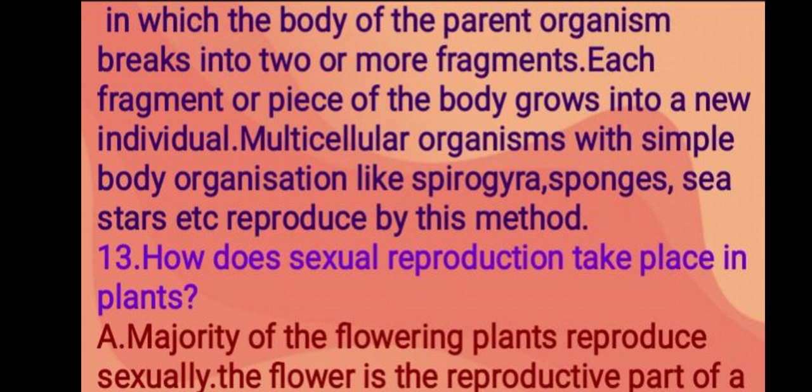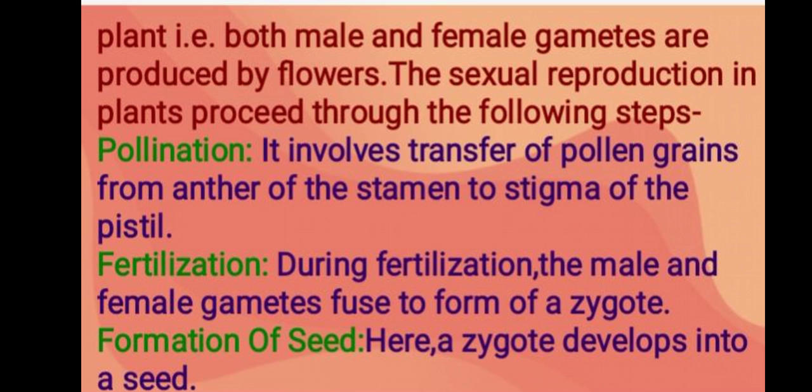Next question: how does sexual reproduction take place in plants? The majority of flowering plants reproduce sexually. The flower is the reproductive part of a plant — both male and female gametes are produced by flowers. Sexual reproduction in plants proceeds through the following steps.